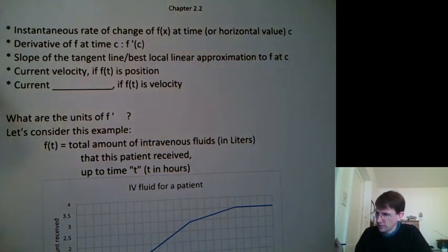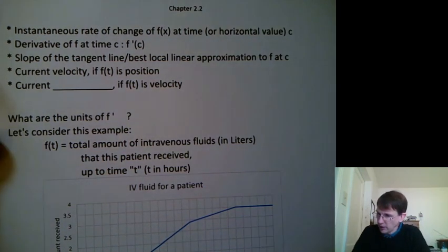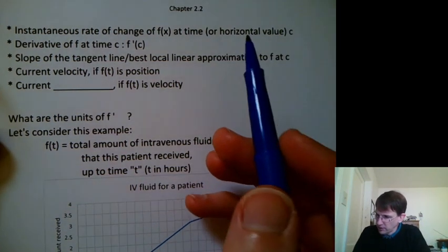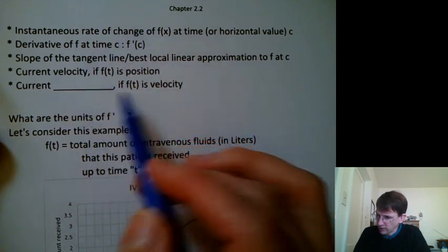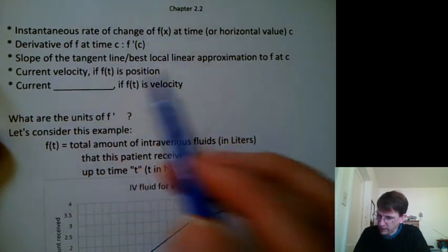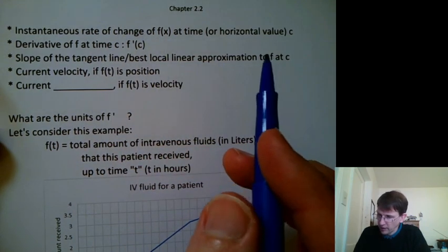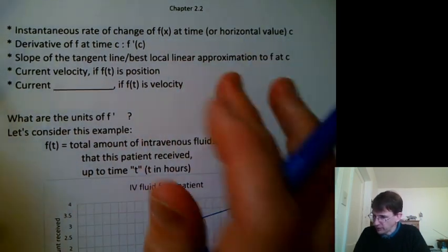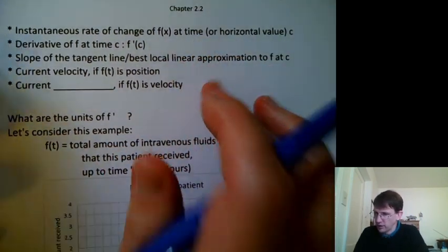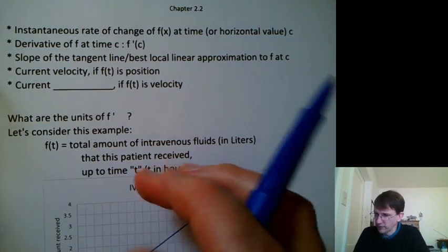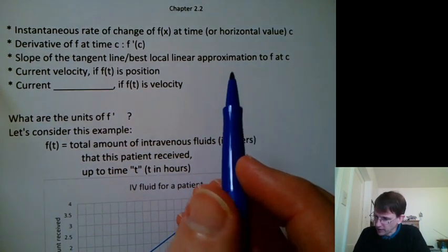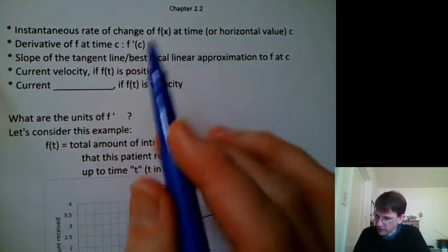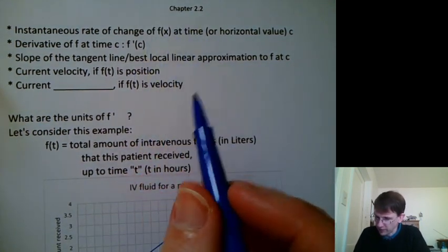We're starting Chapter 2.2. Chapter 2.2 has a lot of these five concepts in it. They're kind of spread out, so I thought I'd make a bulleted list of them all in the same place. How do these five concepts relate to each other?